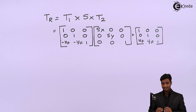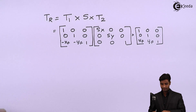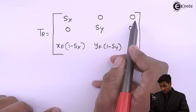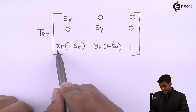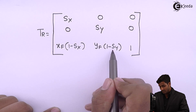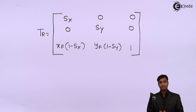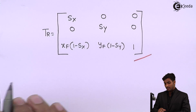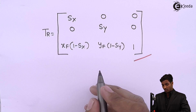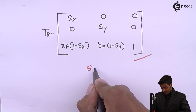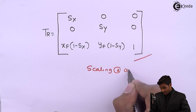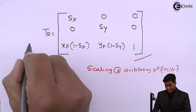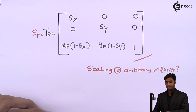After multiplying all these matrices, the resultant transformation TR is: [Sx, 0, 0 / 0, Sy, 0 / Xf(1−Sx), Yf(1−Sy), 1]. This is the total transformation matrix. We use this matrix when an arbitrary point is given — that is, for scaling about arbitrary point Xf and Yf, which can also be called Sf. Thank you.